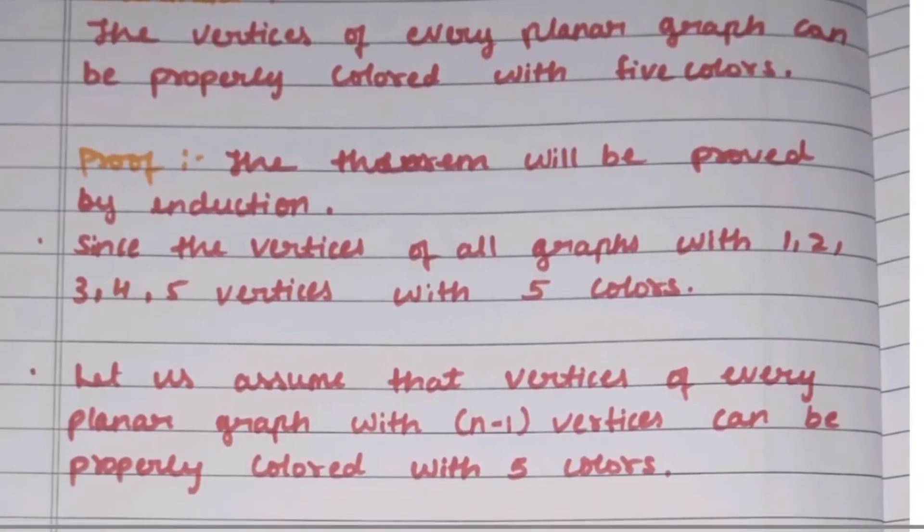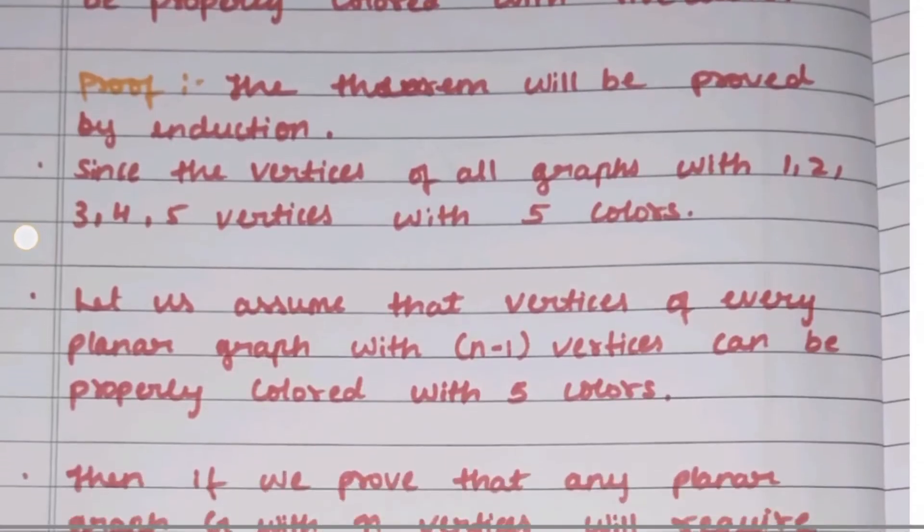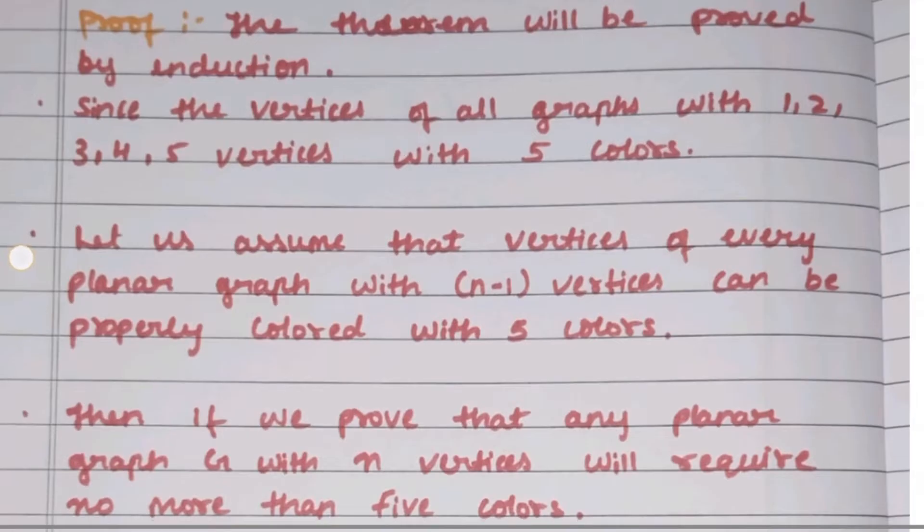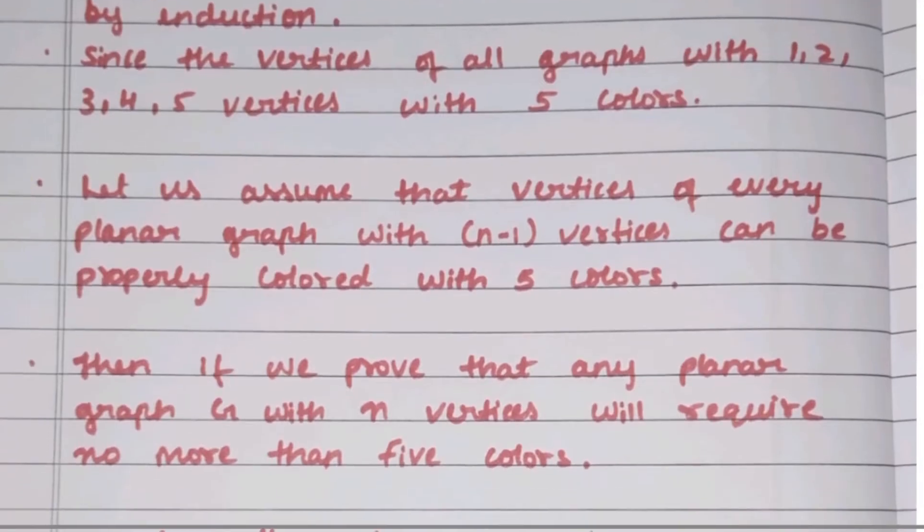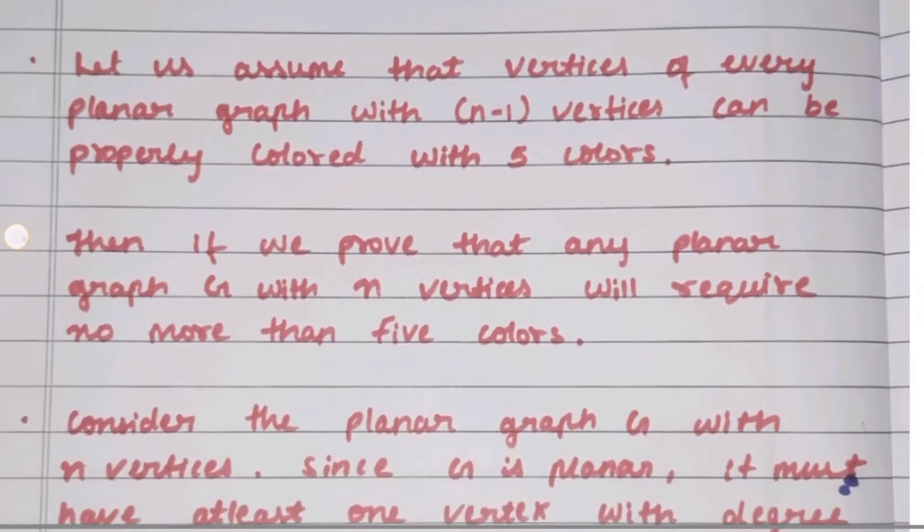The proof uses induction. Since all graphs with 1, 2, 3, 4, or 5 vertices can be colored with 5 colors, we assume that vertices of every planar graph with n-1 vertices can be properly colored with 5 colors. Then we prove that any planar graph with n vertices will require no more than 5 colors.